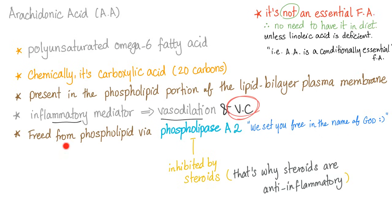The arachidonic acid is captured in the phospholipid. The great enzyme phospholipase A2 frees the arachidonic acid from the phospholipid. Phospholipase A2 is inhibited by steroids — so steroids inhibit the formation of arachidonic acid. Since arachidonic acid is inflammatory, steroids are the ultimate anti-inflammatory.